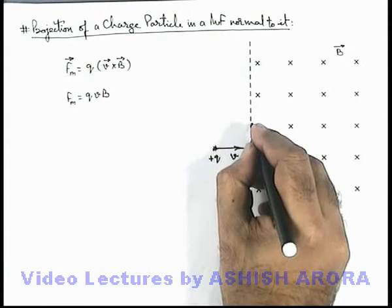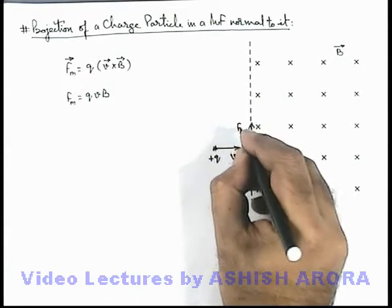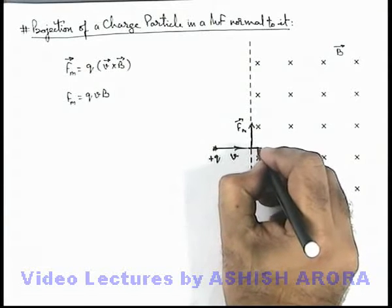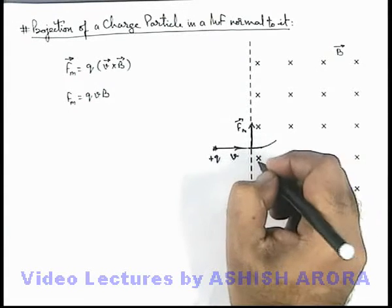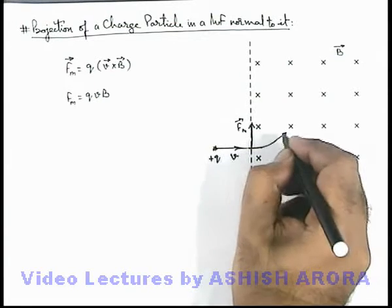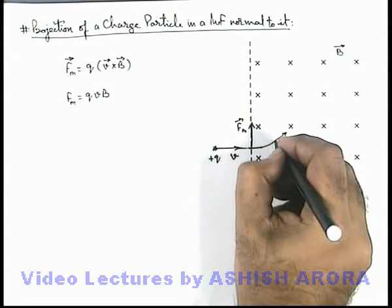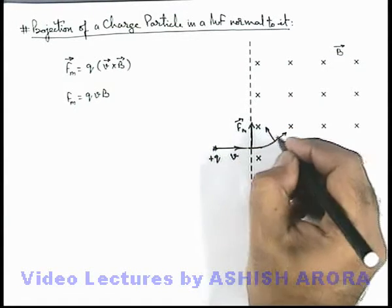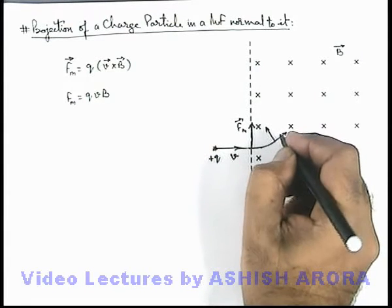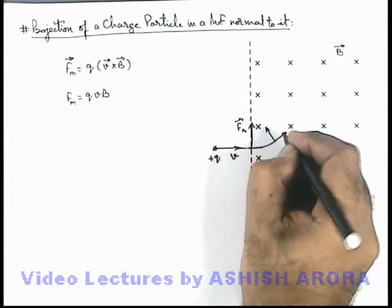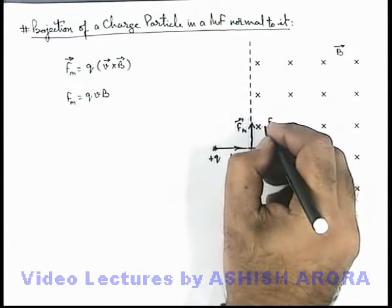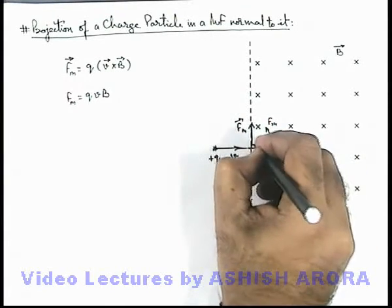As soon as the particle enters, it will experience the magnetic force vector in a direction perpendicular to both velocity and magnetic field. Due to this force, it will bend in the upward direction, and its velocity direction will change. Correspondingly, the magnetic force direction will also change. By using the cross product or any other rule, you can find out that the direction of the magnetic force will always be acting perpendicular to velocity.